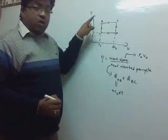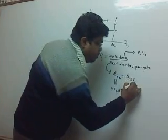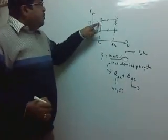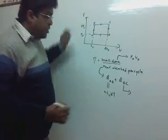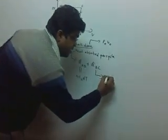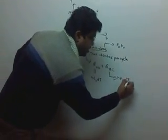Now for Q_BC, see, this process is carried out at constant pressure, isobaric process. So this will be nC_PΔT.